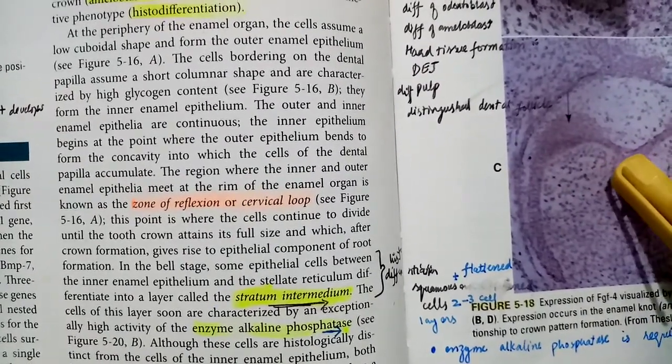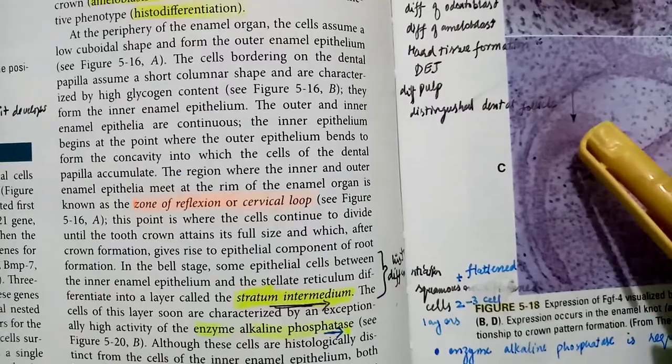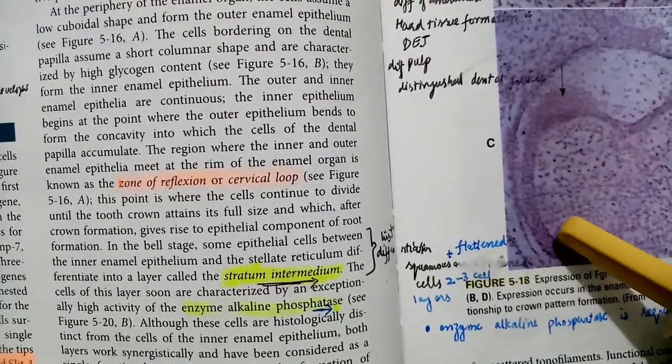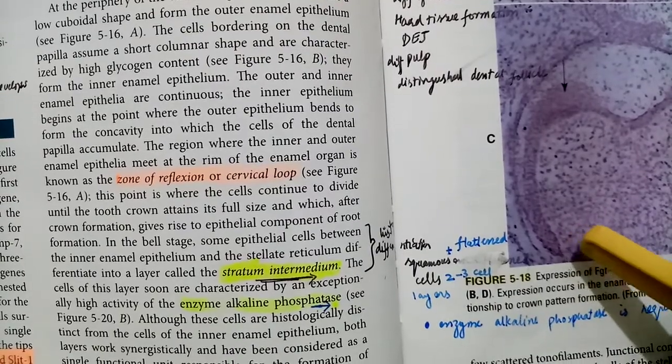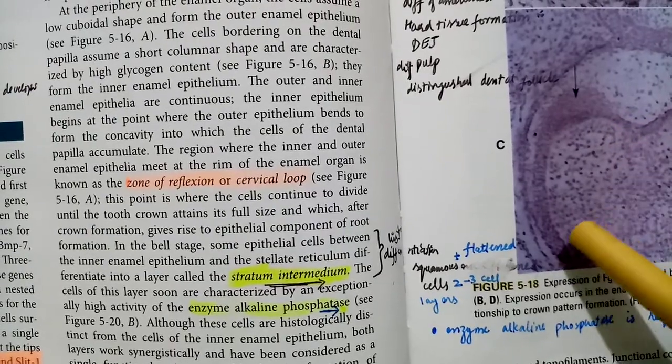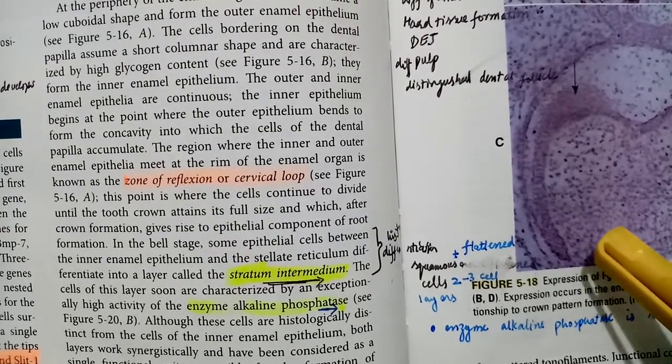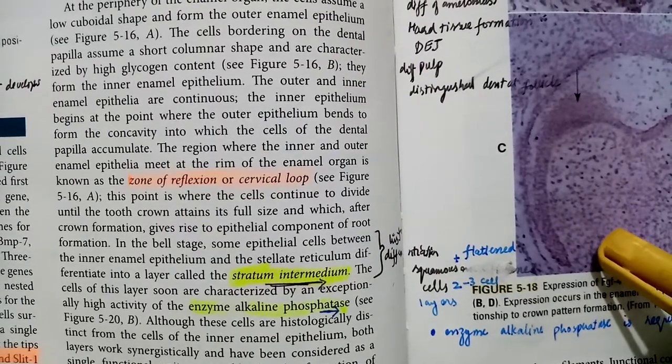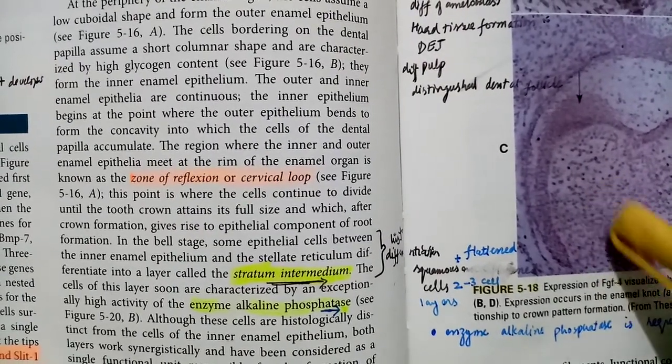They form the inner enamel epithelium. The outer enamel epithelium and inner enamel epithelium are continuous where the outer epithelium bends to form the concavity into which the cells of the dental papilla accumulate. The outer enamel epithelium and inner enamel epithelium are continuous.